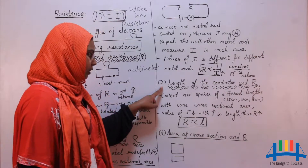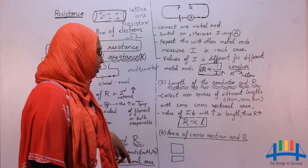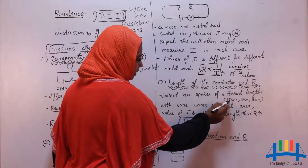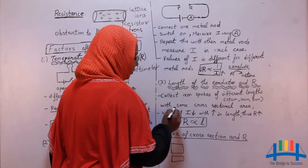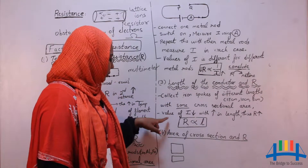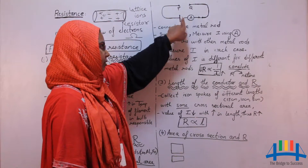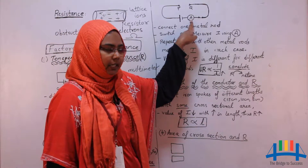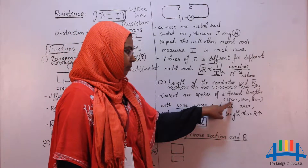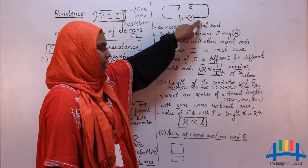Coming to the third factor — length of the conductor and resistance, denoted by R. Collect iron spokes of different lengths — say 15 cm, 10 cm, 5 cm — with the same cross-sectional area. Make the same circuit with P and Q as open terminals, battery, ammeter, and a switch. Take one iron spoke, for example 15 cm, place it between P and Q, switch on the circuit, and measure the value of the current.